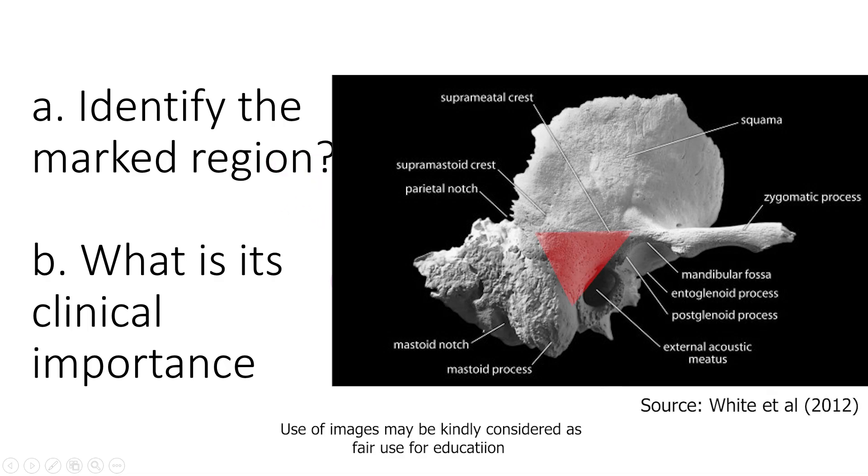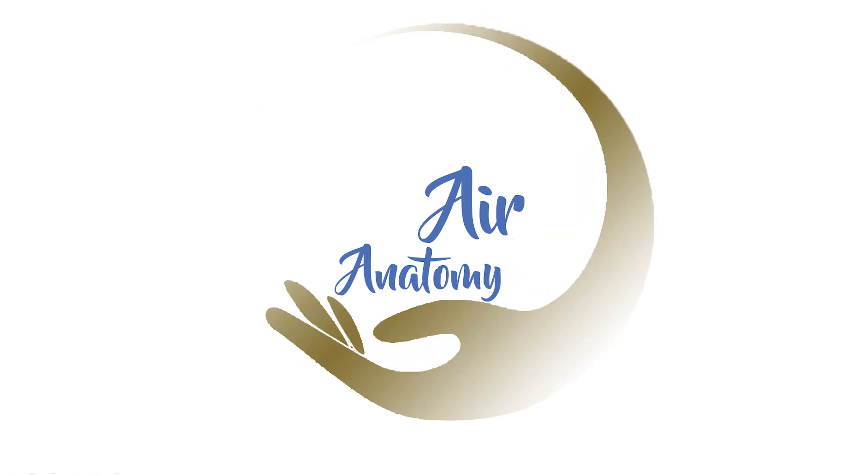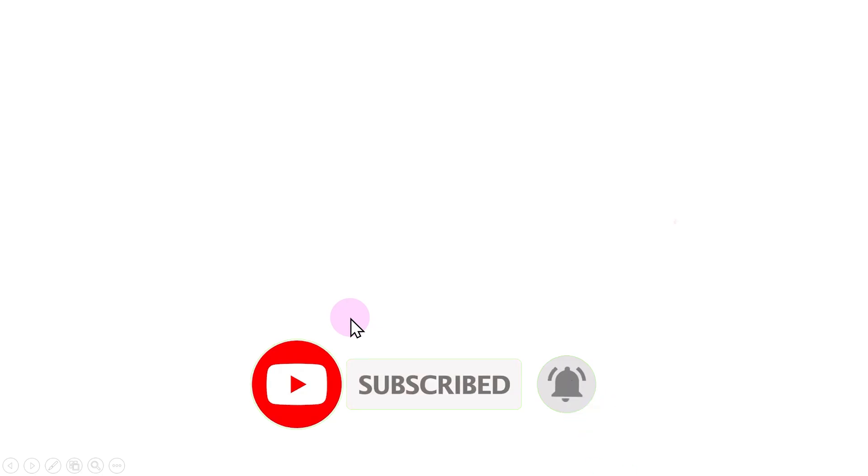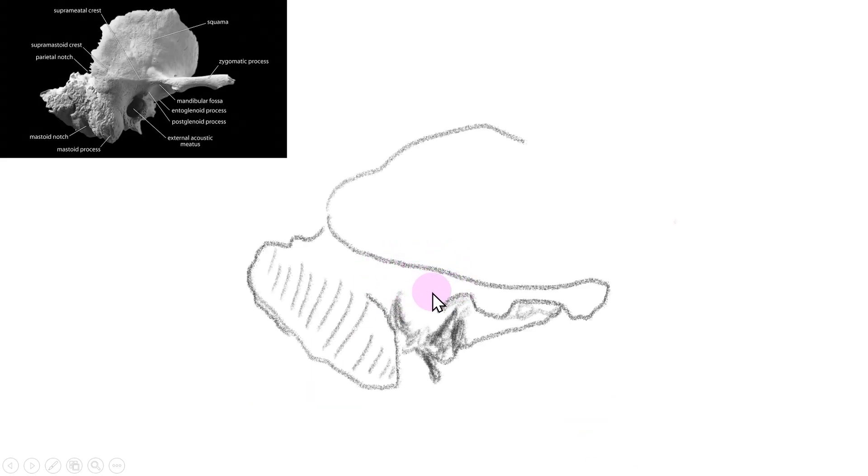Identify the marked region and its clinical importance. Hello and welcome to the Ear Anatomy Channel. Today we will learn about the suprameatal triangle, or MacEwen's triangle. This is an illustration of the lateral view of the right temporal bone.